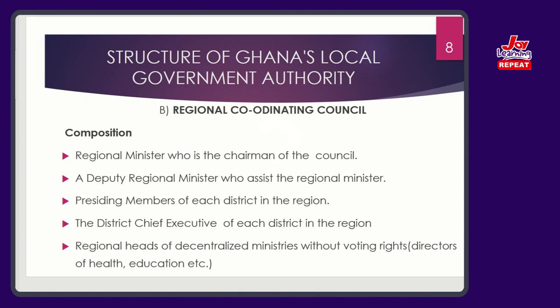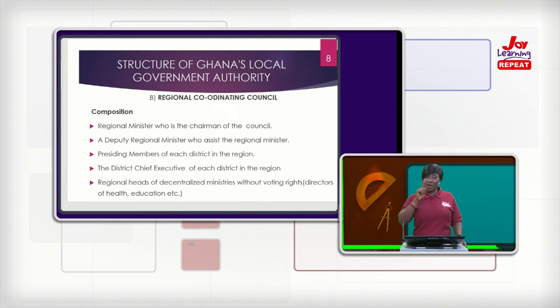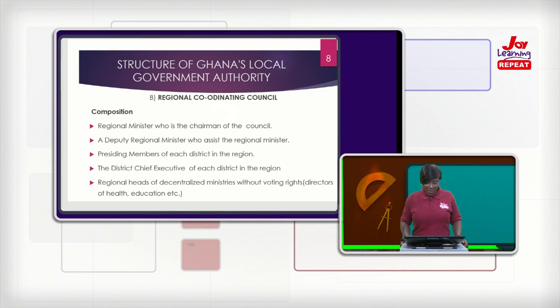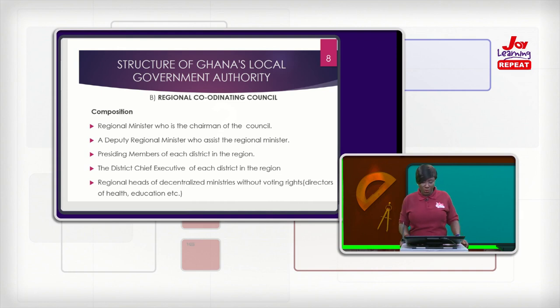The RCC is made up of the regional minister, who is the chairman of the council. The regional minister is an appointee of government, appointed by the president and vetted by the legislature. Vetting is one of the functions of the legislative arm of government — done by the vetting committee of parliament. They would vet the minister to see how competent and efficient they can be in the positions they are going to hold. After they have been vetted and put there, they are the chairman of the council.